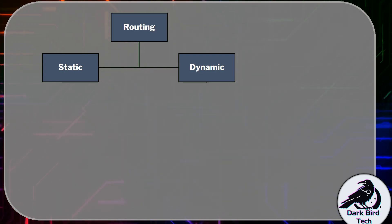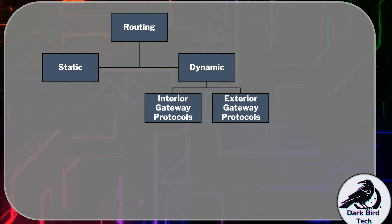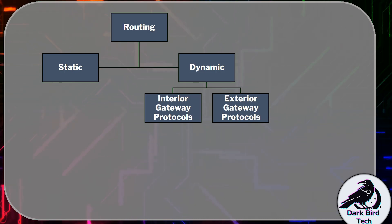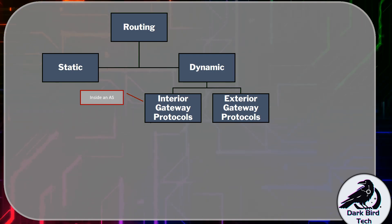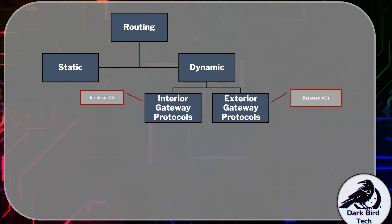When we're going down the dynamic branch, we need to understand quite a few things — like what's the deal with interior gateway protocols and exterior gateway protocols. Sometimes abbreviated to IGP and EGP. The difference is that we use an interior gateway protocol inside of an AS, and we use an exterior gateway protocol between ASs.